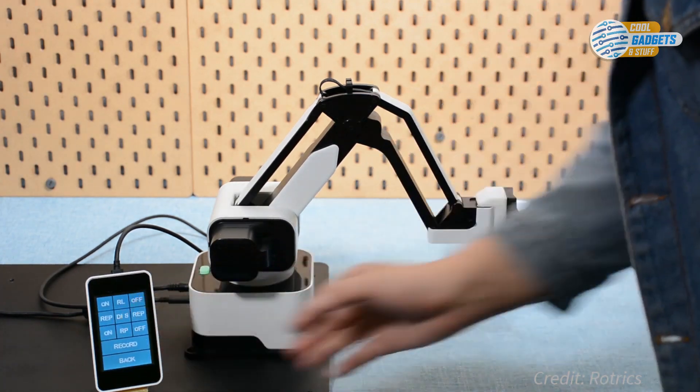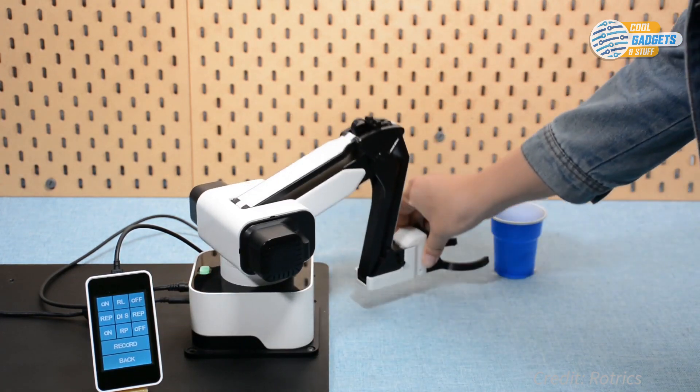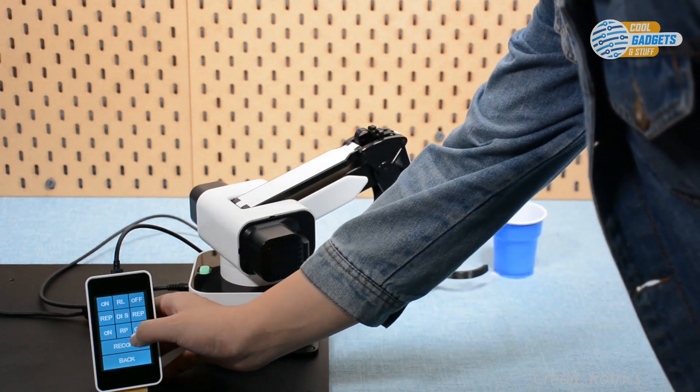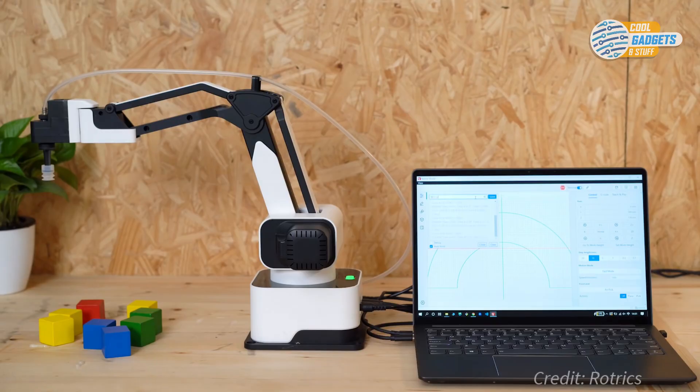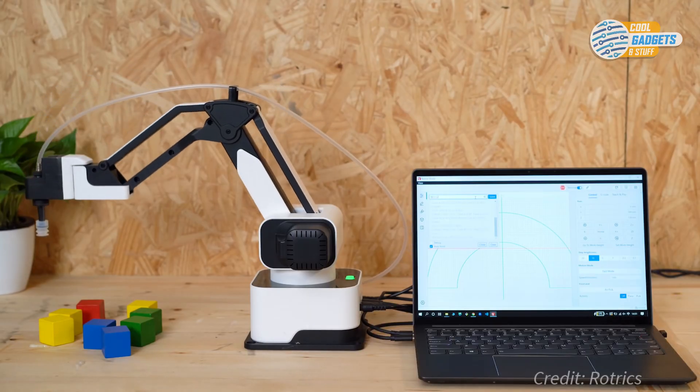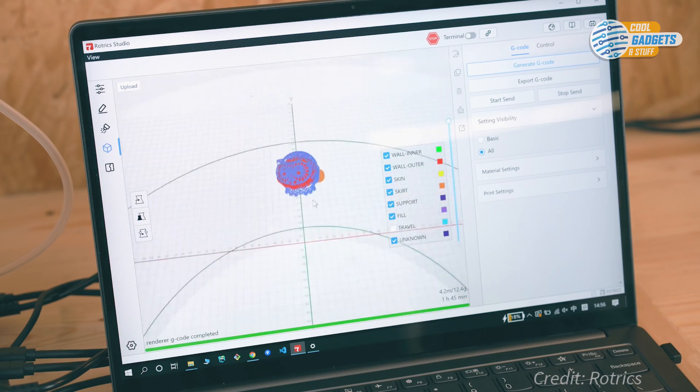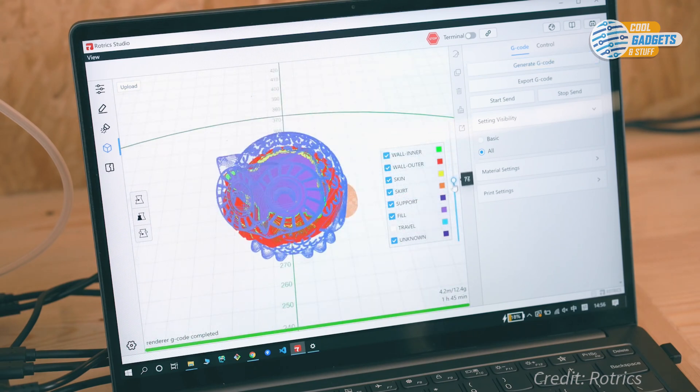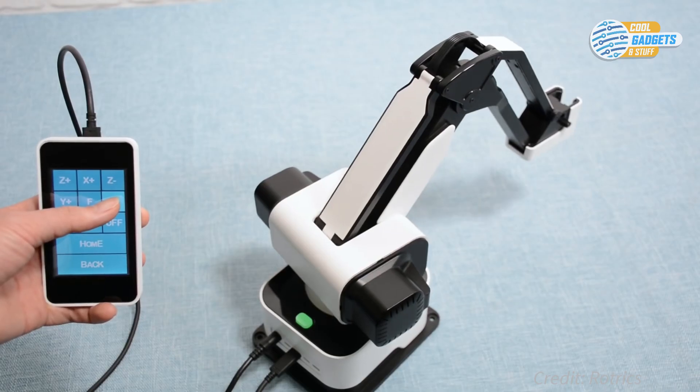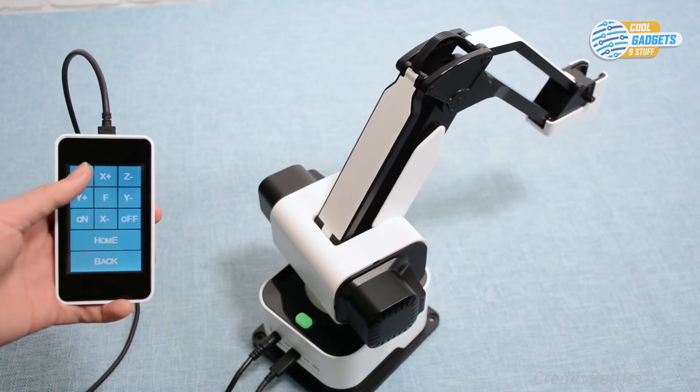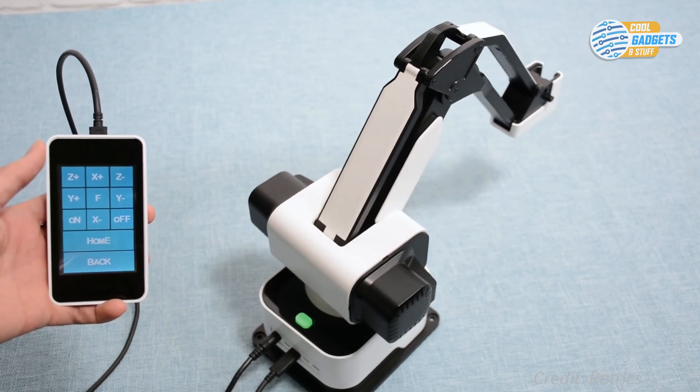DexArm is made easy to use. Its drag and record function allows you to drag the arm and record the movement and make DexArm repeat the movements. The included Rotrix Studio software lets you design projects and create custom automation, so it's a great tool for learning to code. With a 3.5-inch touchscreen, you can check the status and command DexArm on the go.